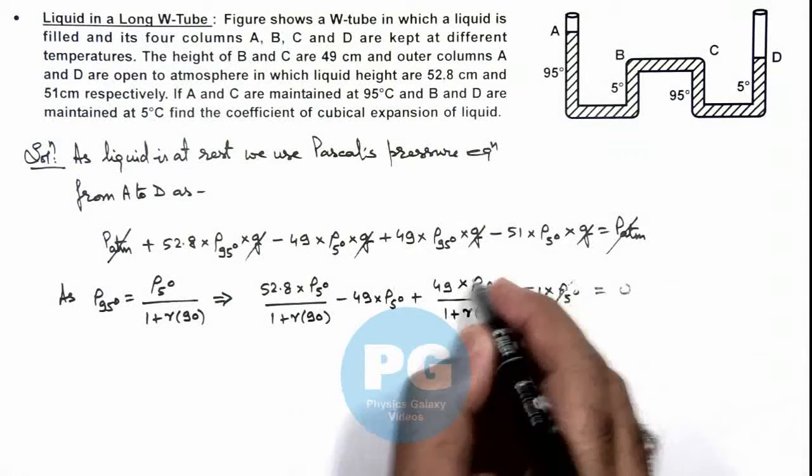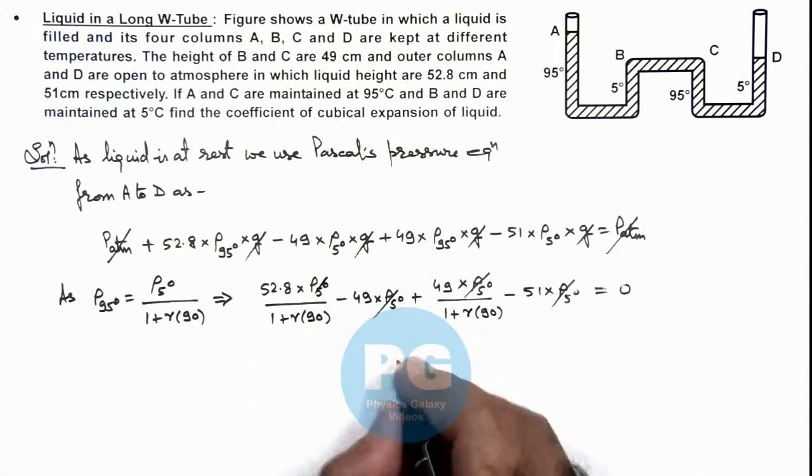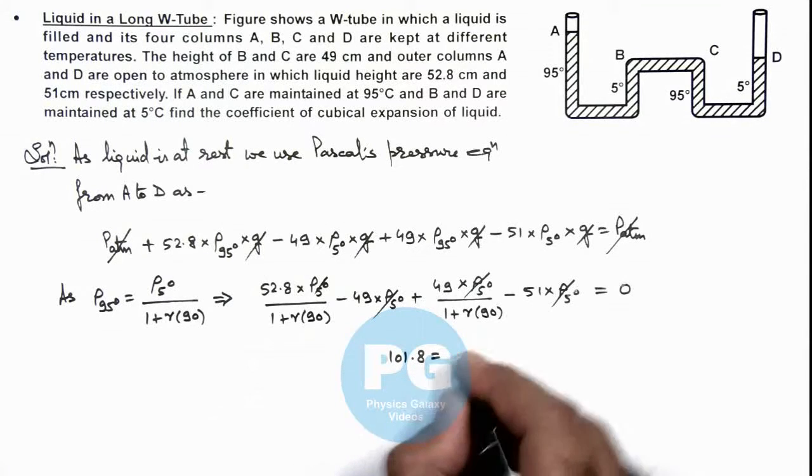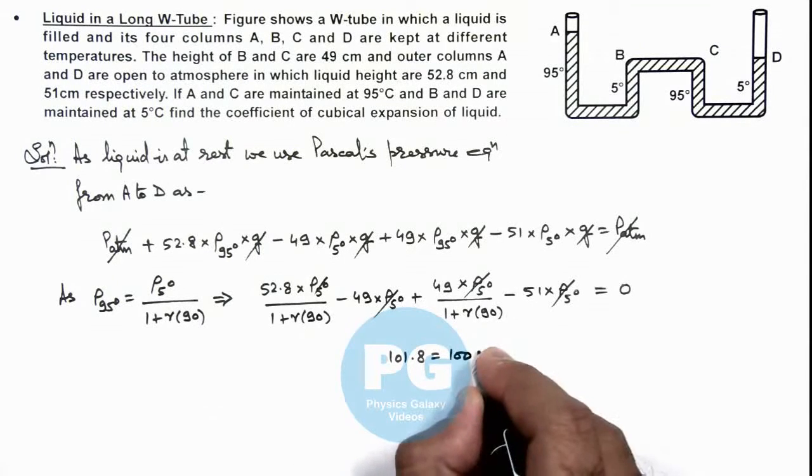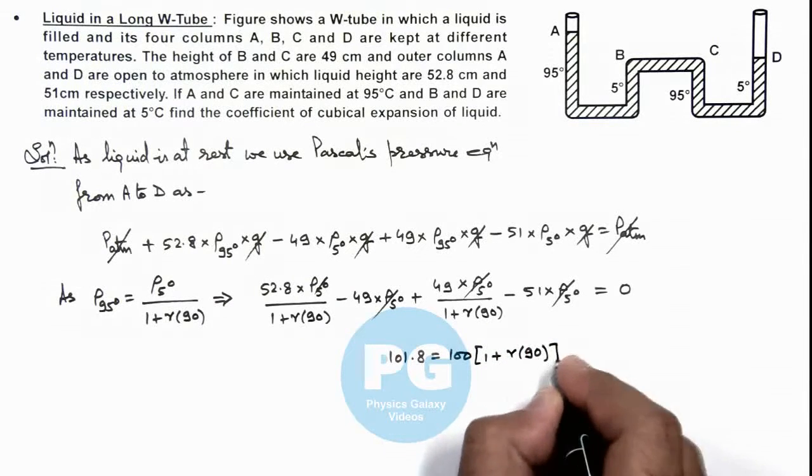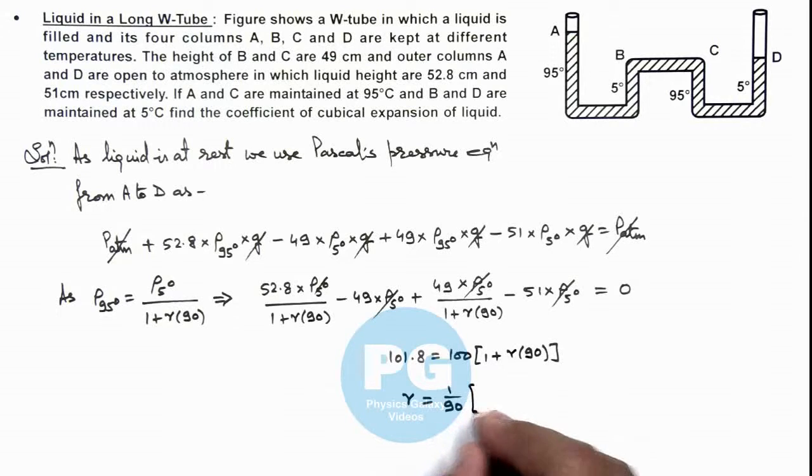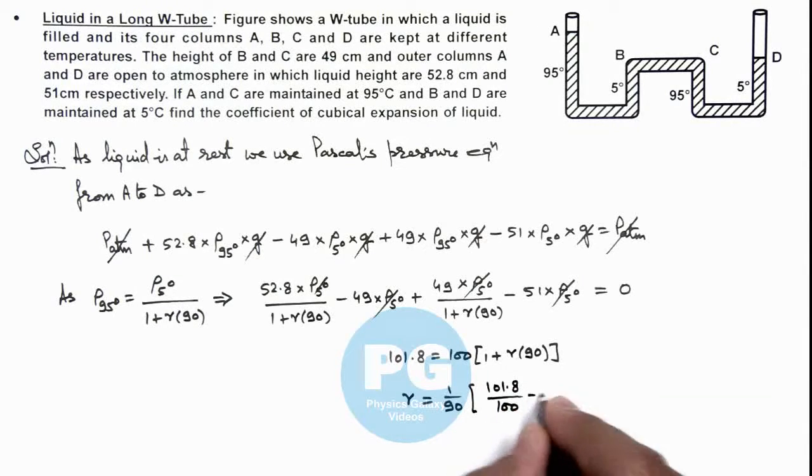Here ρ at 5 degree also gets cancelled out, and if you simplify this equation it will come out to be 101.8 is equal to 100 multiplied by 1 plus γ times 90. Further on simplifying, the value of γ will get here, and this is 1 by 90 multiplied by 101.8 by 100 minus 1.